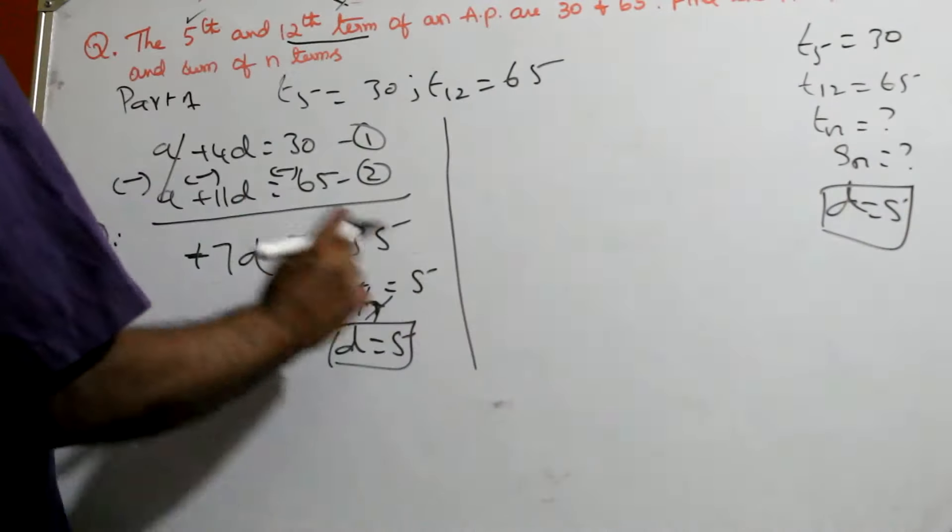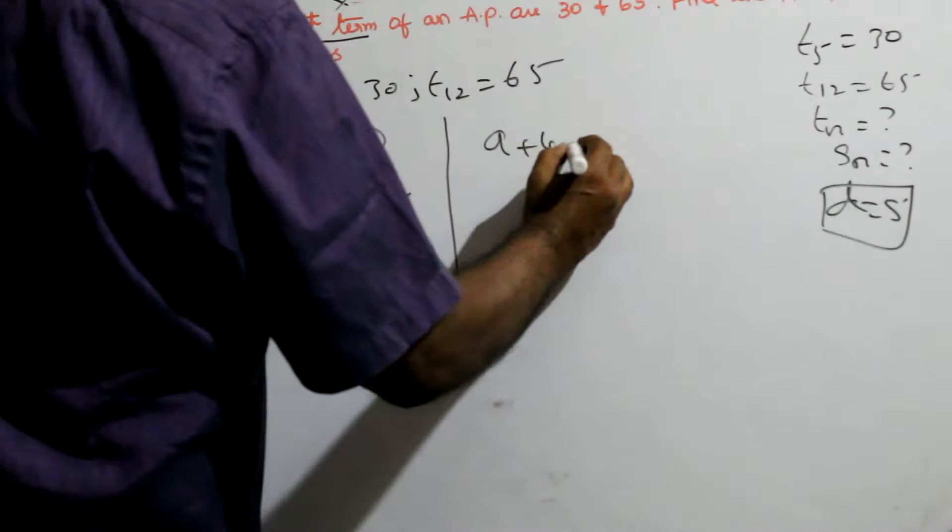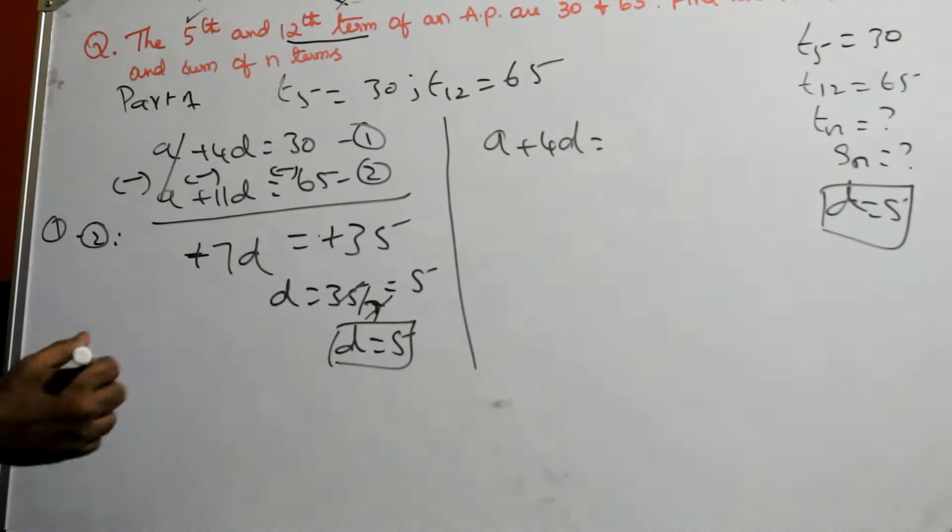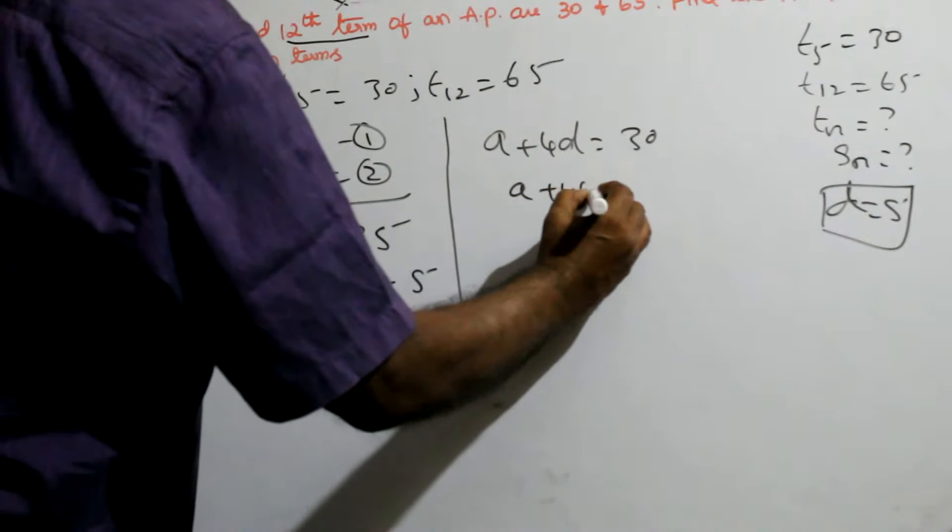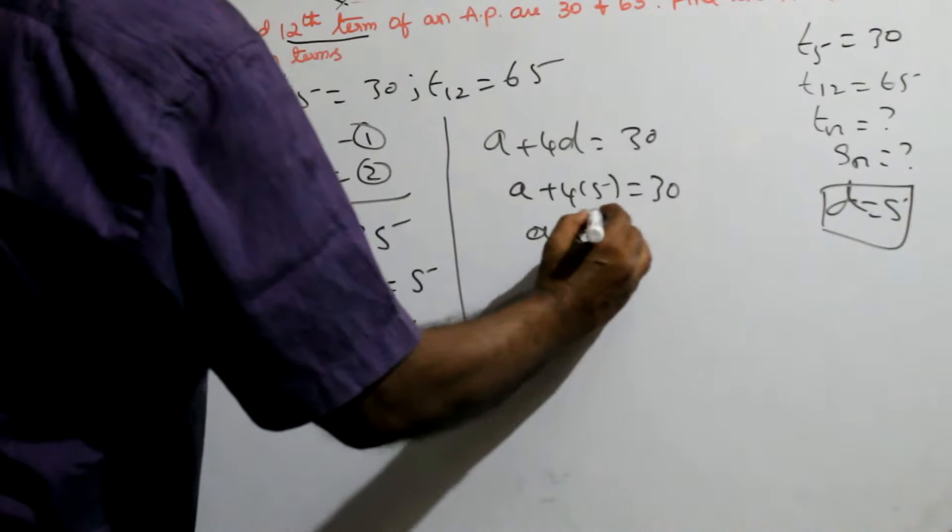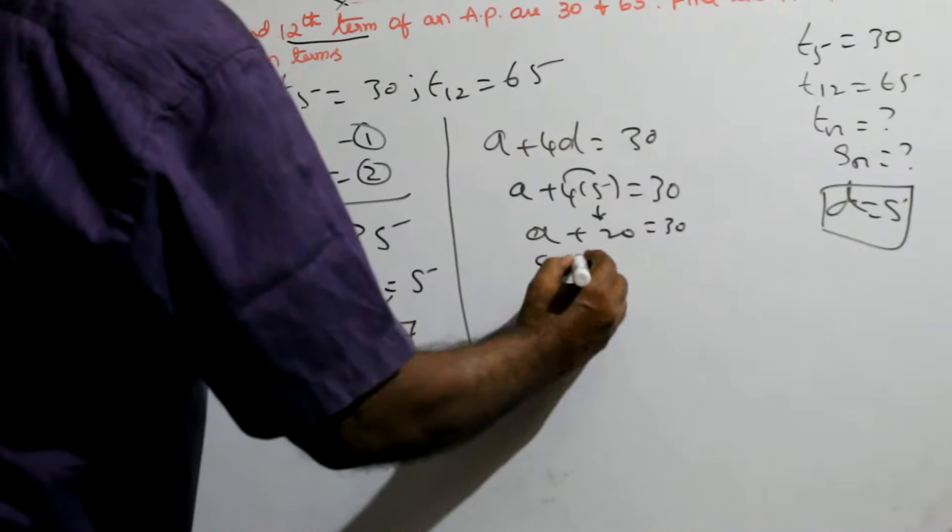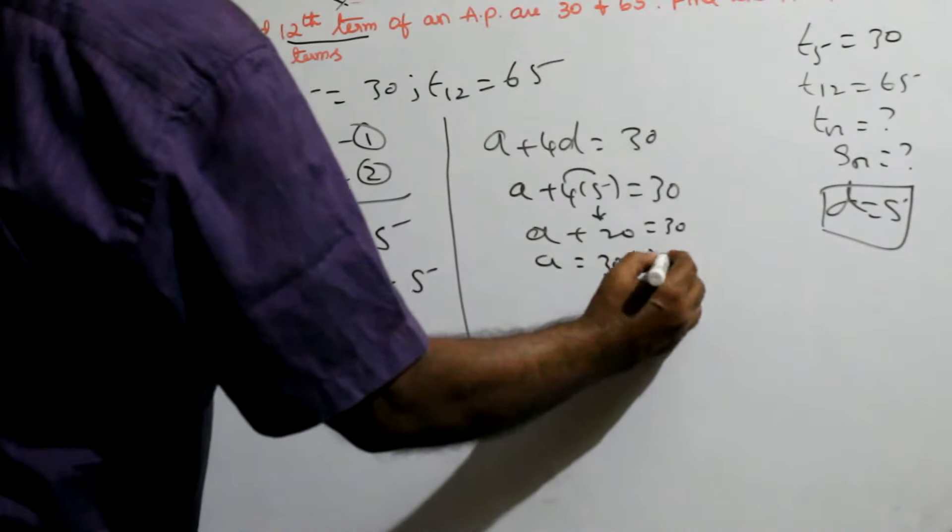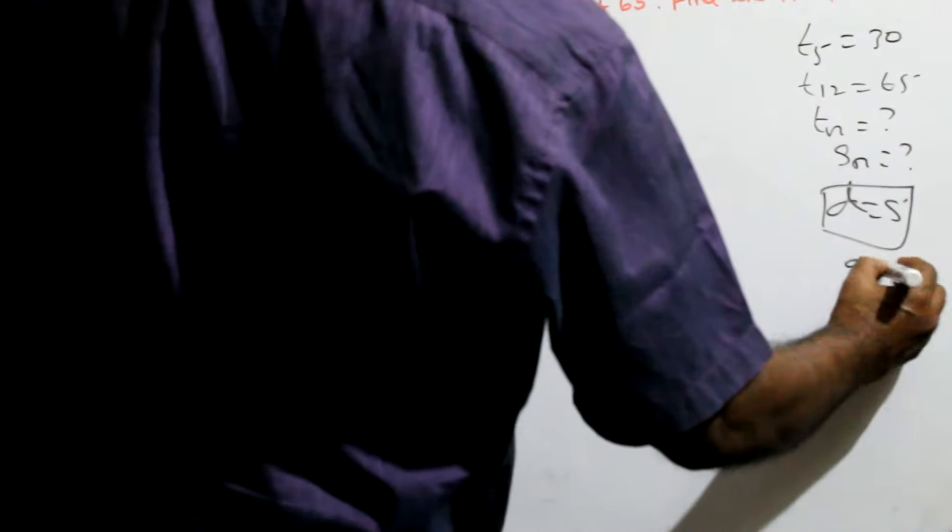Next you have to find A. Put in equation 1. A plus 4d is equal to 30. Now A we don't know, plus 4 into d is 5, equal to 30. A plus 20, this is nothing but 20, equal to 30. 4 into 5. A is equal to 30 minus 20, and A is nothing but 10. Put A is equal to 10.